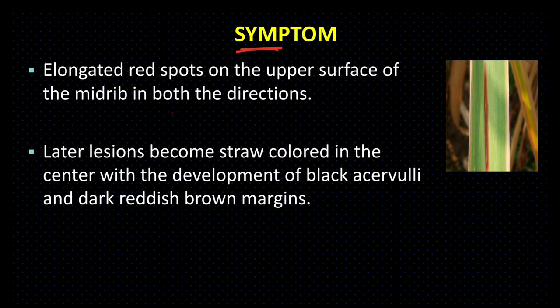Symptom: Elongated red spots appear on the upper surface of the midrib in both directions. Later, lesions become straw-colored in the center with development of black acervuli and a dark reddish-brown margin.